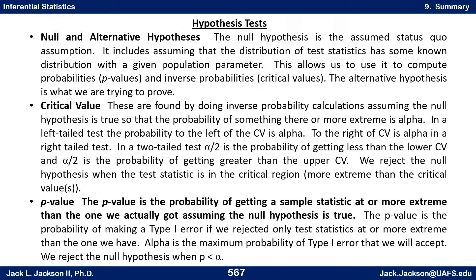There are two main ways of doing a hypothesis test: critical values or p-values. Critical values are found by doing inverse probability calculations, assuming the null hypothesis is true, so that the probability of something there or more extreme is alpha. In a left-tailed test, the probability to the left of the critical value is alpha; in a right-tailed test it's to the right. In a two-tailed test, alpha over two is on each side. We reject the null hypothesis when the test statistic is in the critical region — more extreme than the critical values.